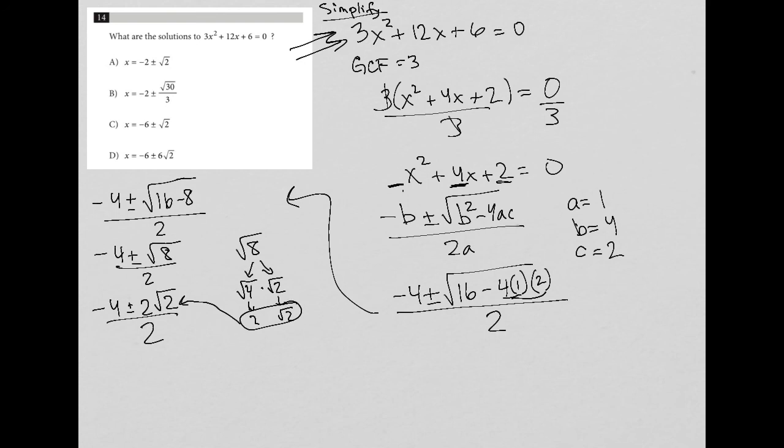So I can simplify one more time because 2 goes into itself once. It goes into 4 twice, and it goes into 2 once. So what I'm left with here is negative 2 plus or minus square root of 2. That's what I'm left with, and therefore the answer must be choice A.